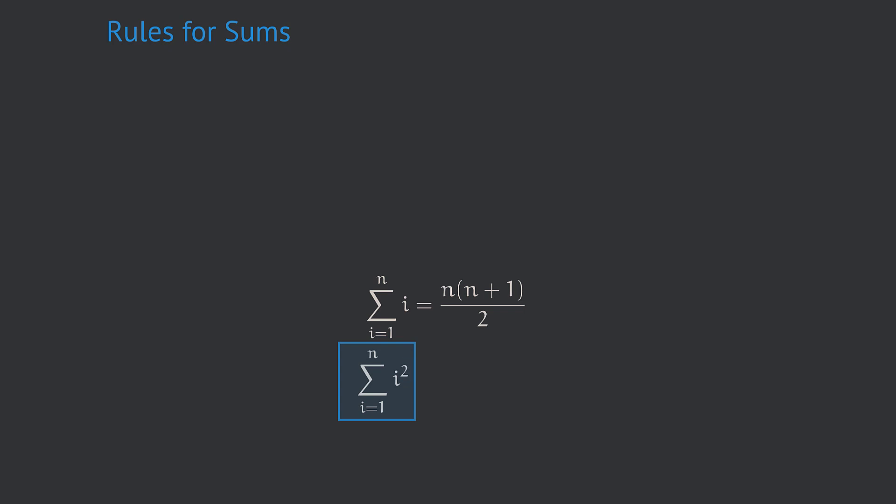The explicit formula for that sum is not much more complicated than the little Gauss. In fact, it looks like this. However, to find this explicit formula is indeed more complicated compared to the way how we found the little Gauss.